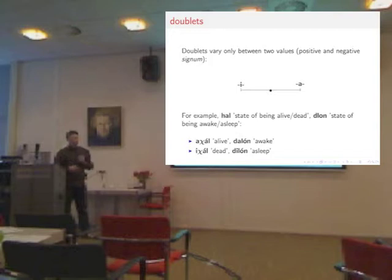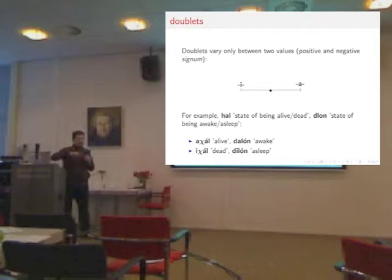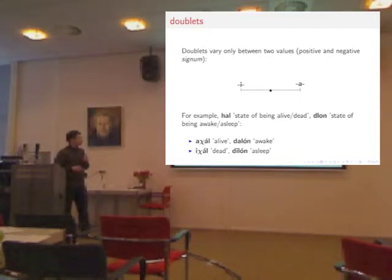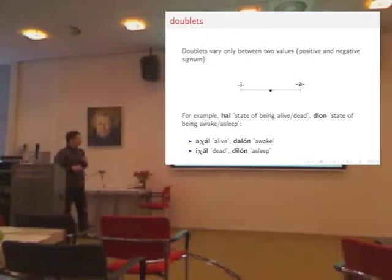That was the one-sided scale. Now we have doublets — yesterday we had some triplets. Some states do not run on a continuous scale but rather between two values, denoted by the vowels A and I. A typical example is 'hal,' the state of being alive or dead — obviously it can't really be 'very dead' or 'a bit alive.' Another is 'long,' the state of being awake or asleep. In the case of 'hal,' the vowel is a prefix: 'ahal' means alive, 'ihal' means dead. In the case of 'long,' it's an infix: 'along' means awake, 'ilong' means asleep.